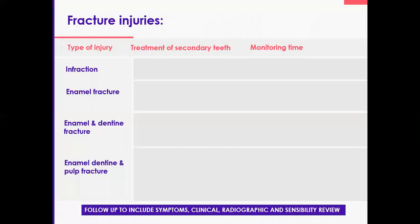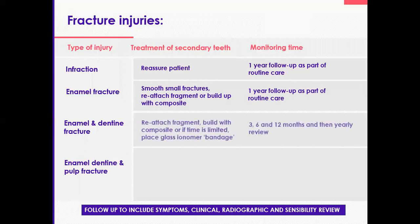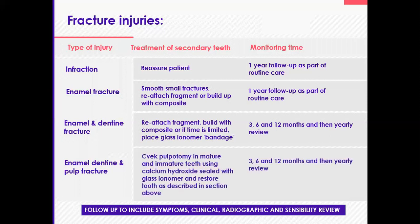You've made it to the end of the fracture injuries. Here's a summary of what we covered. We discussed infractions on day one — reassure the patient and monitor in a year. Then enamel fractures, which you smooth, reattach, or build up and monitor in a year. Enamel-dentine fractures: reattach, build up, or if no time, bandage with GIC and review at three, six, and twelve months, then annually — generally for five years. Enamel-dentine-pulp fractures: perform pulpotomy and restore, and review at three, six, and twelve months. If you have the fragment, try to reattach it; if not, build up.